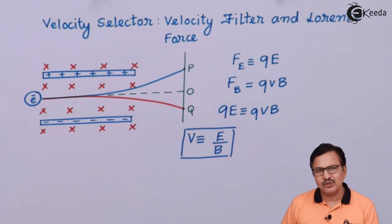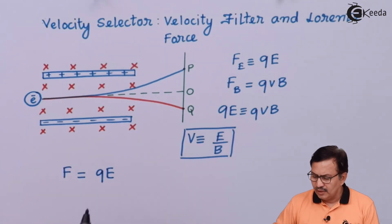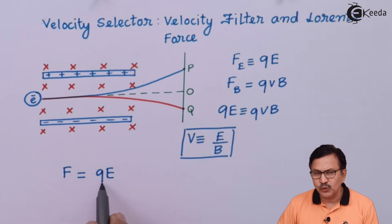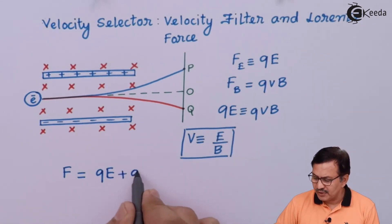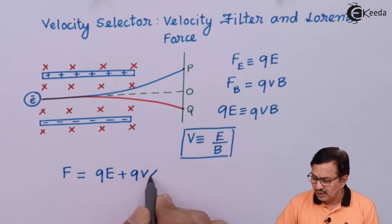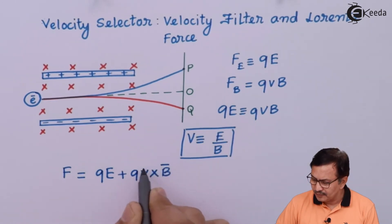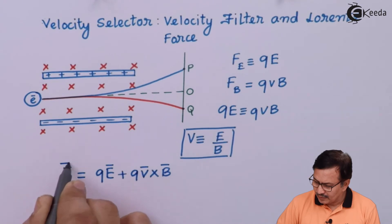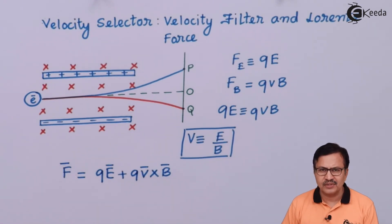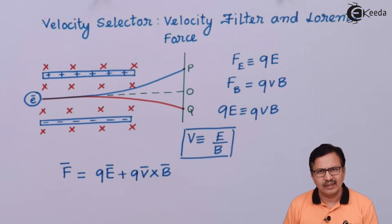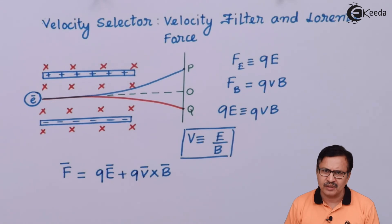Next, we define something which is called the Lorentz force. The Lorentz force F = QE + Q(V × B), which is the electric force plus the magnetic force. This expression takes into consideration both the electric force and the magnetic force to which the electron is being subjected.